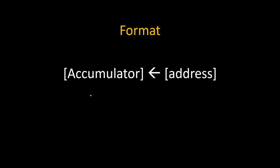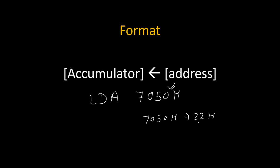Let's take an example to understand it clearly. Suppose the instruction is LDA 7050H. Then 7050H is the address, and some data is stored at that address — suppose 22H is stored there. Because of this instruction, 22H will get loaded directly inside the accumulator.